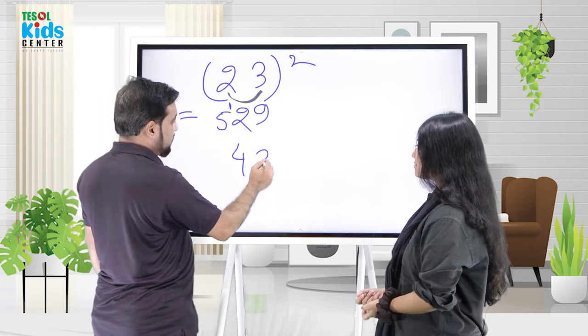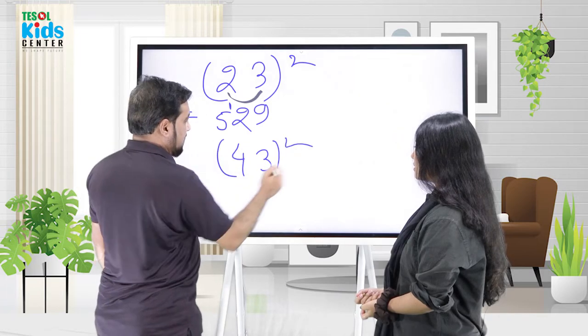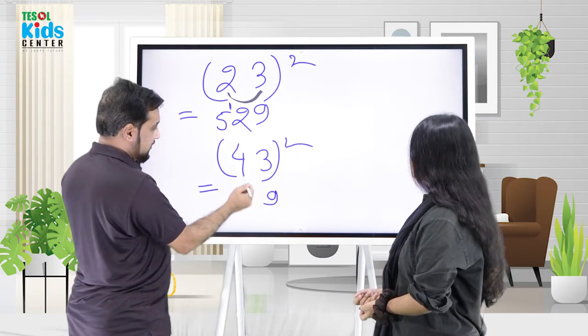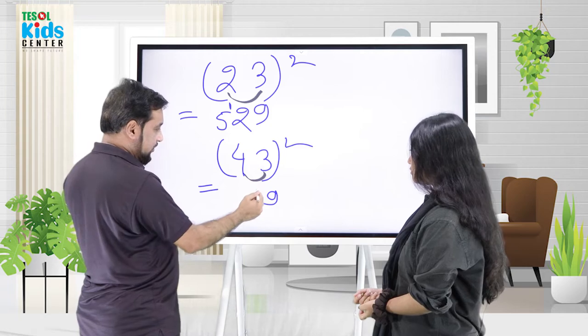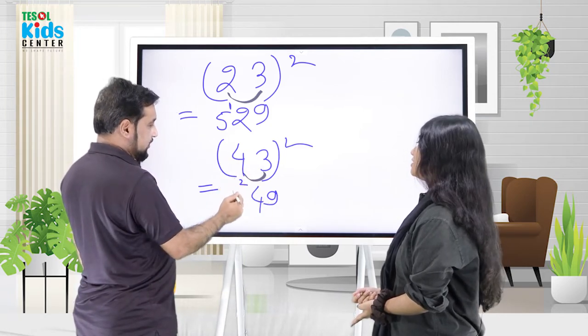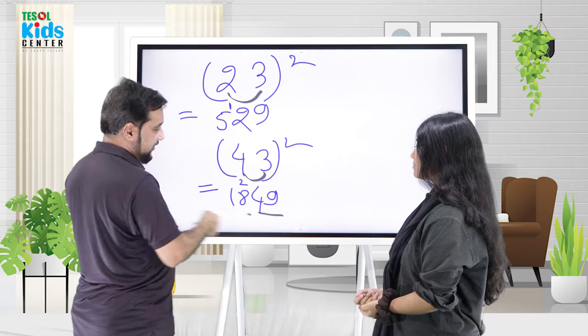Then 43 squared. 9, then 12 doubled is 24, carry 2. 16 plus 2 equals 18. So 1849, very good!